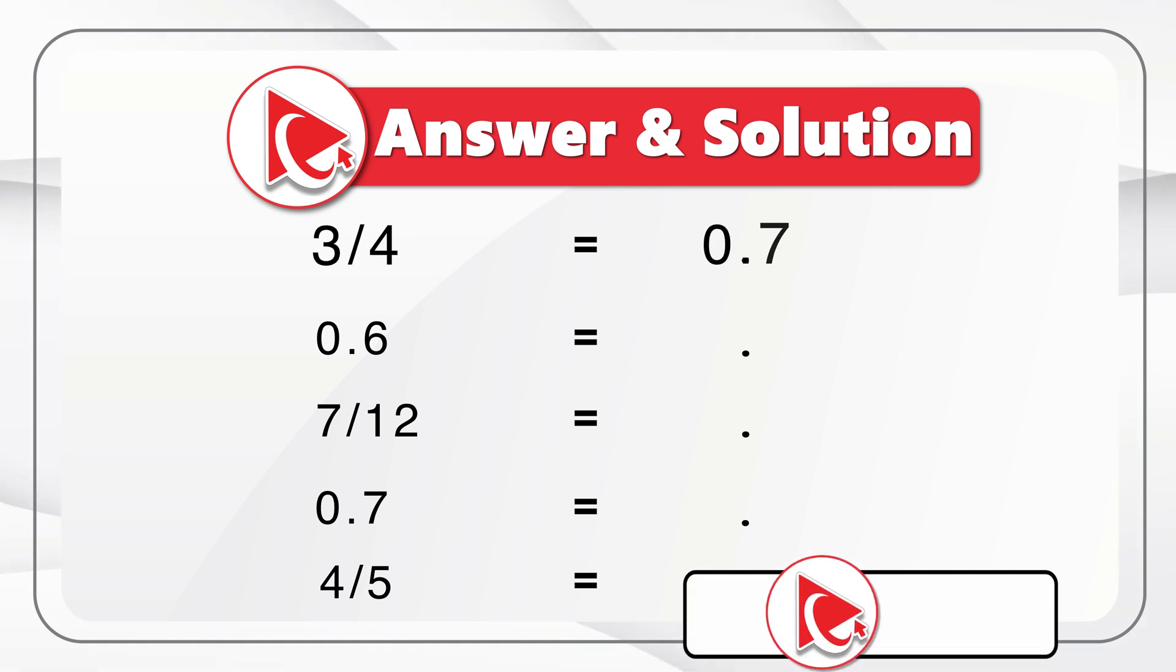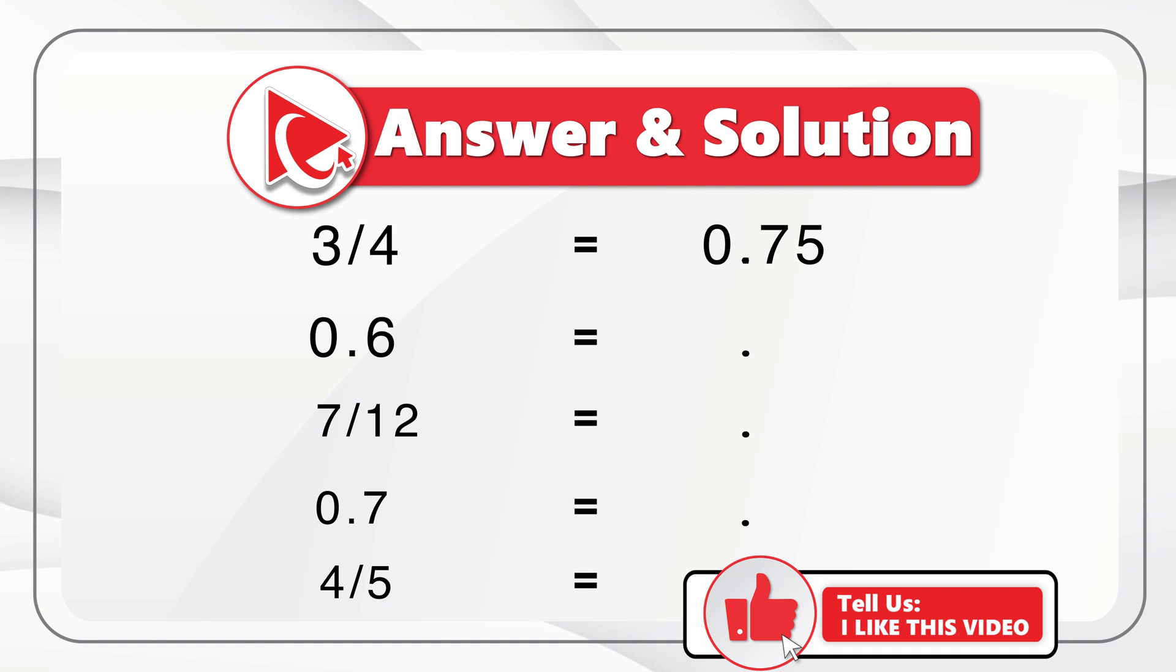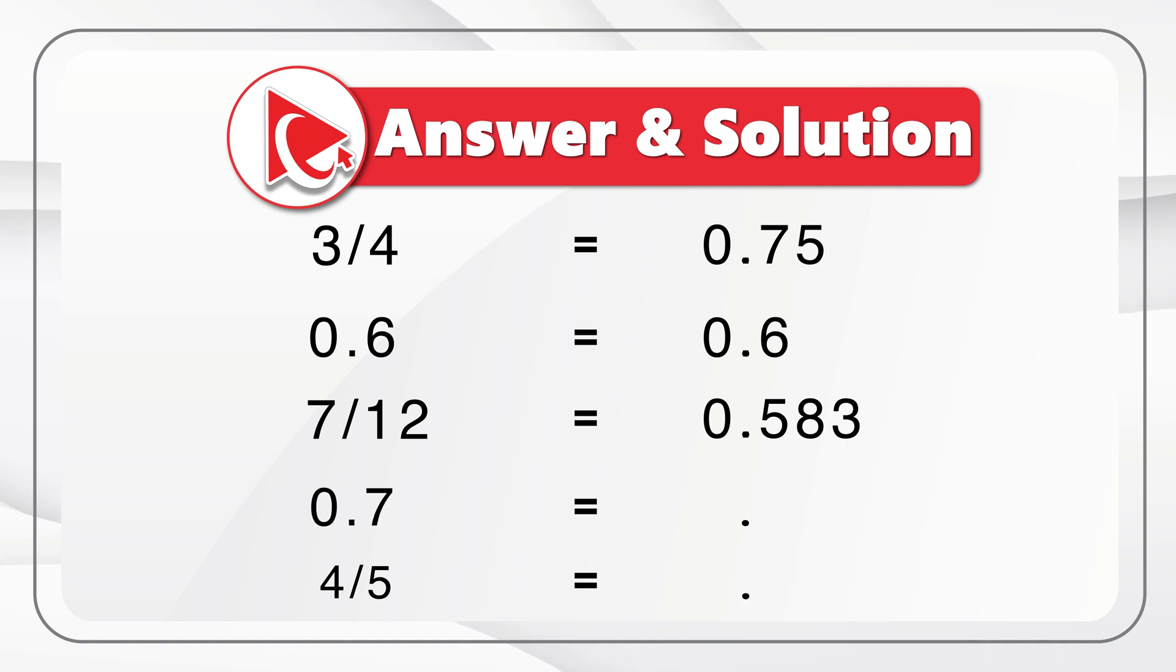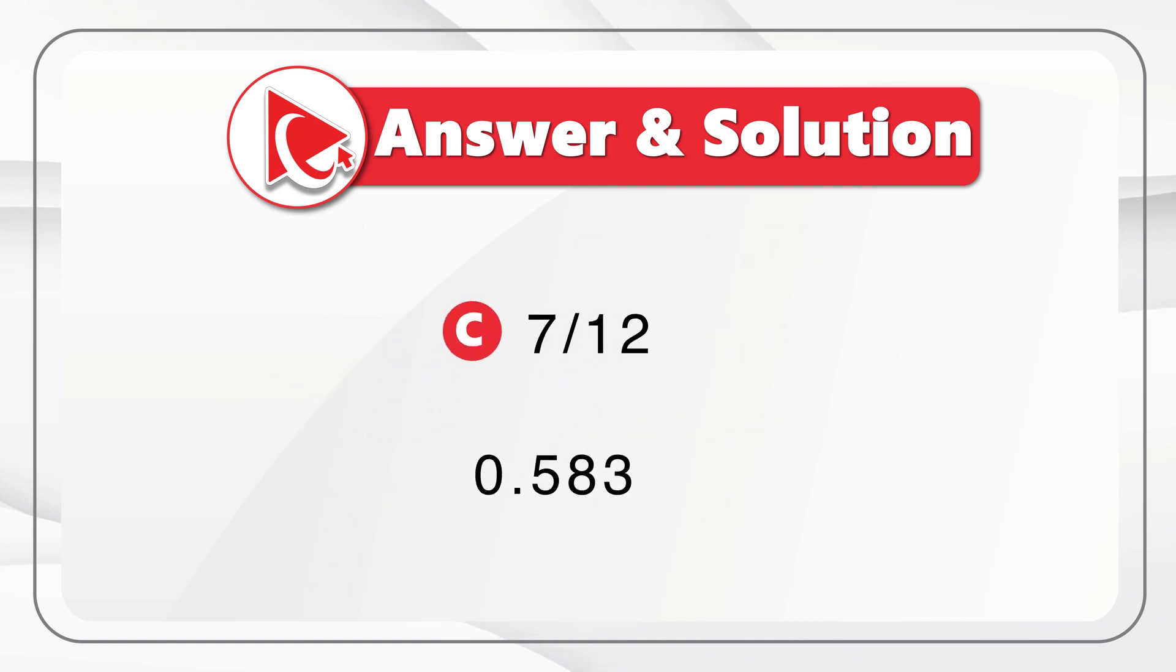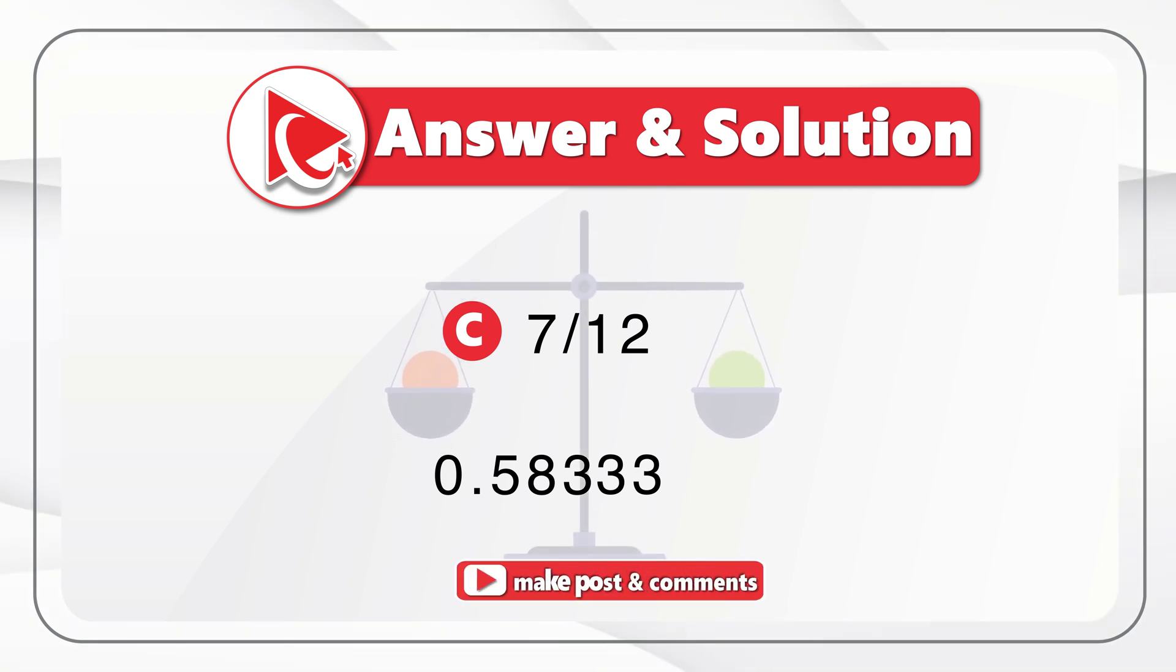3/4 in decimal is 0.75. 0.6 is 0.6. And 7/12 is 0.583. 0.7 has the same value. And 4/5 is 0.8. Now you can easily see that the smallest value is choice C, 7/12, which is approximately 0.58333. Did you get to the similar solution? If not, please make sure to post your answer and solution in comments.